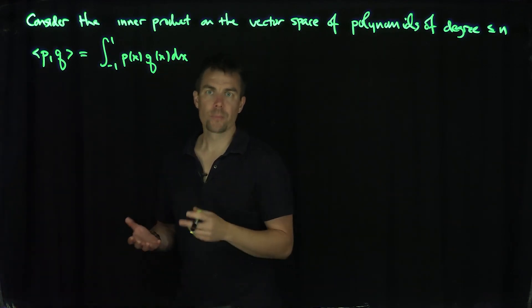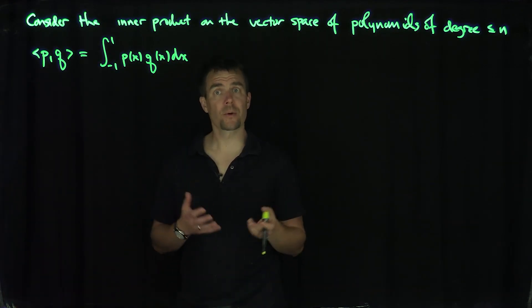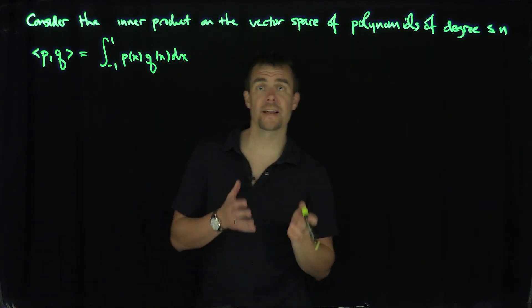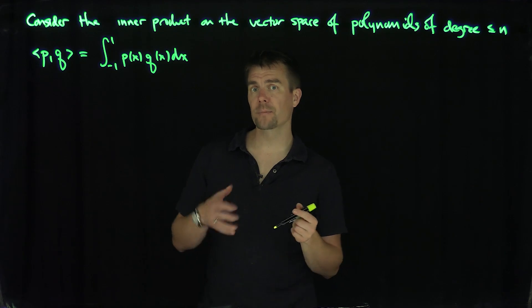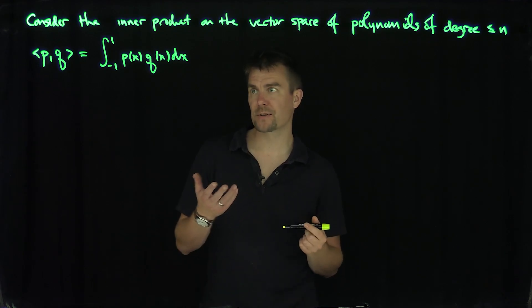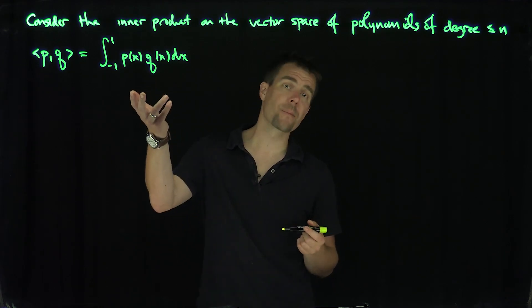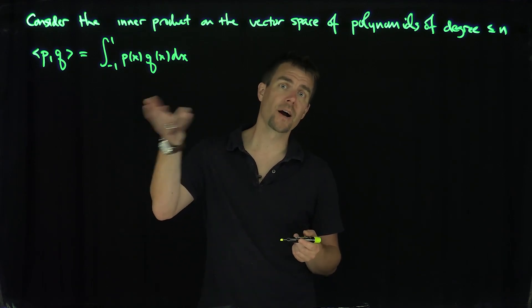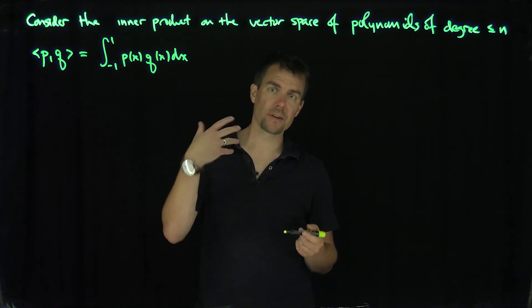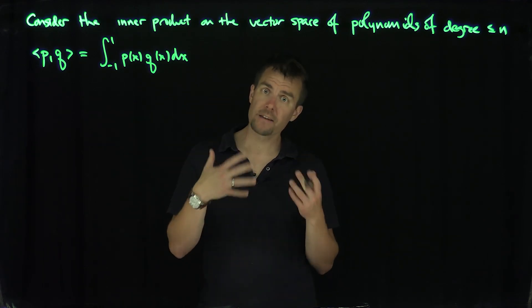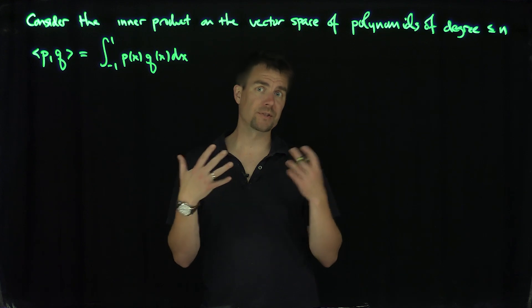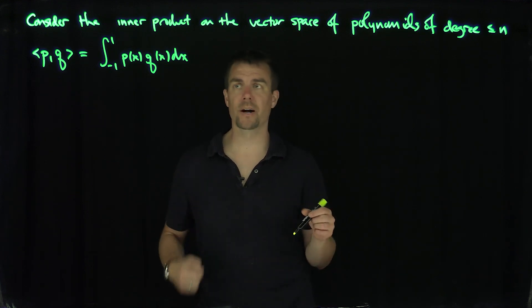Now, you might ask why this is an inner product. We can check that this is indeed an inner product, but the easiest way to think about this is that since this is a Riemann sum, it's basically an infinite version of the standard inner product.